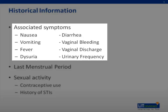Always do a thorough review of systems, including nausea, vomiting, fevers, pain with urinating, any diarrhea or GI complaints, vaginal bleeding, vaginal discharge, and urinary frequency — all very important questions to ask in the history.